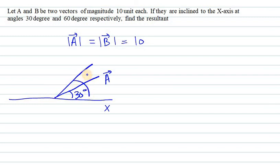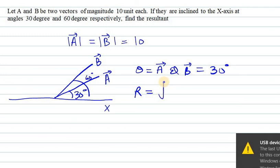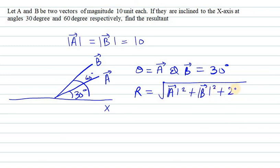The total angle here is 60 degrees, and the angle between A and B is 60 minus 30, which is 30 degrees. So theta is 30 degrees. Now we need to find the resultant vector, which will be under root A squared plus B squared plus 2AB cos theta.